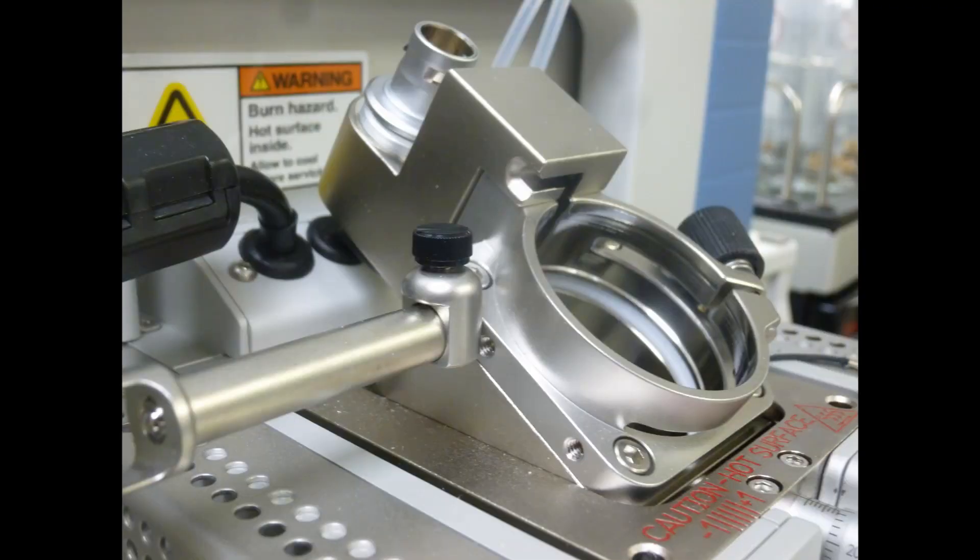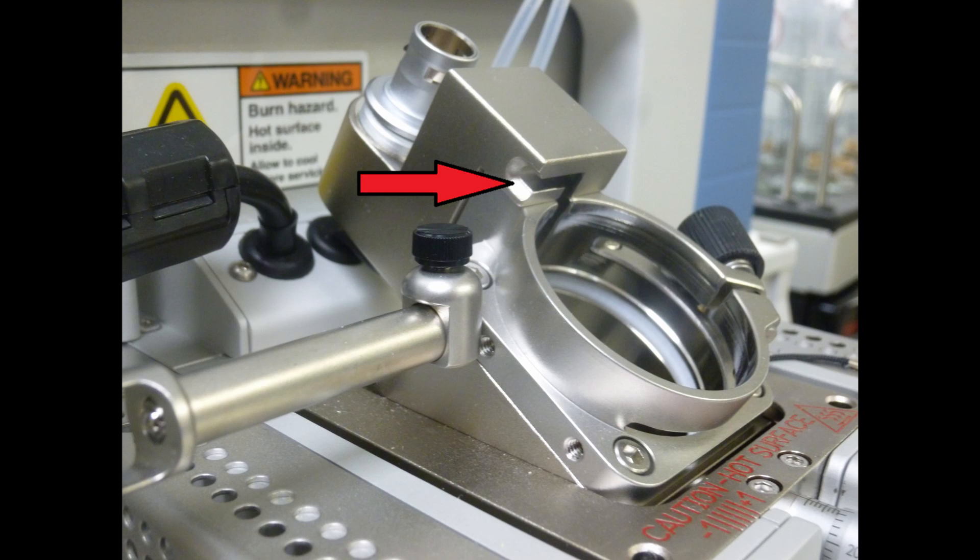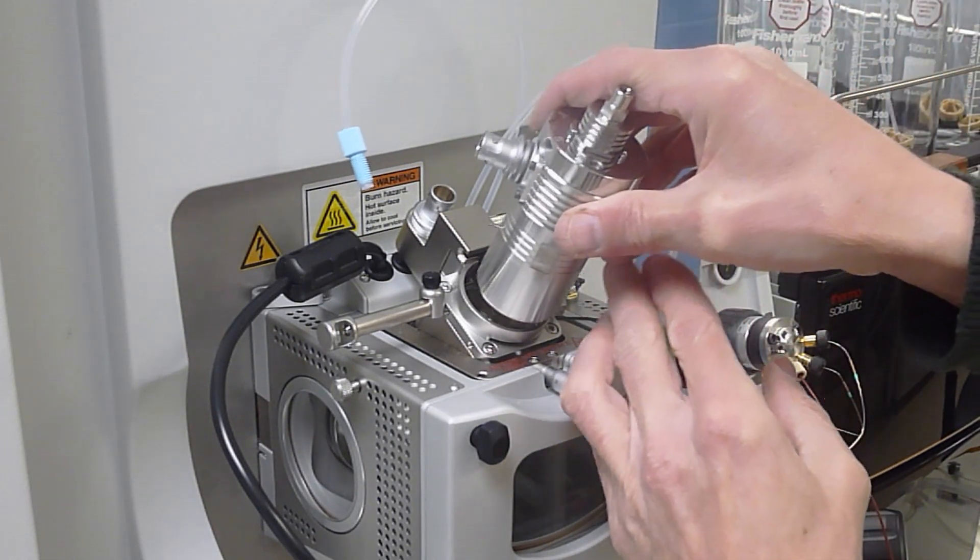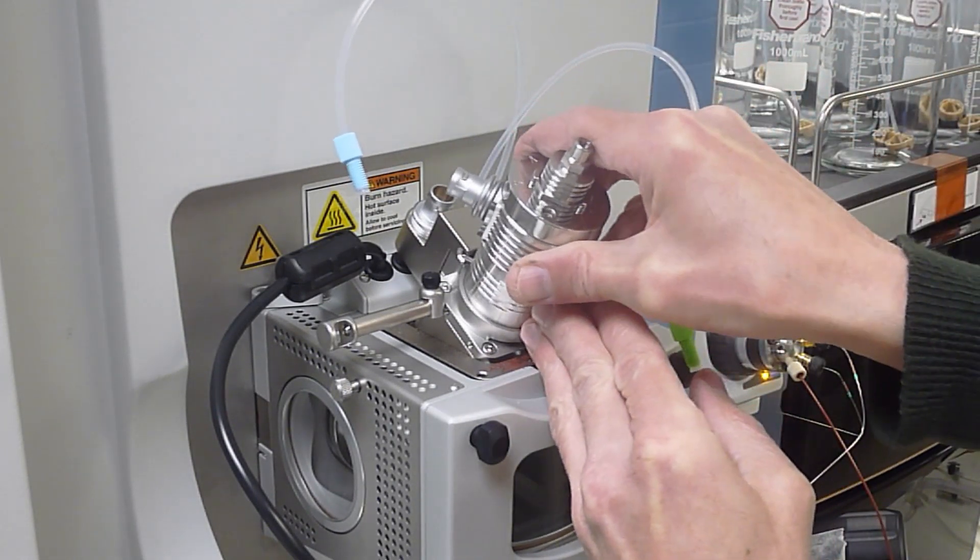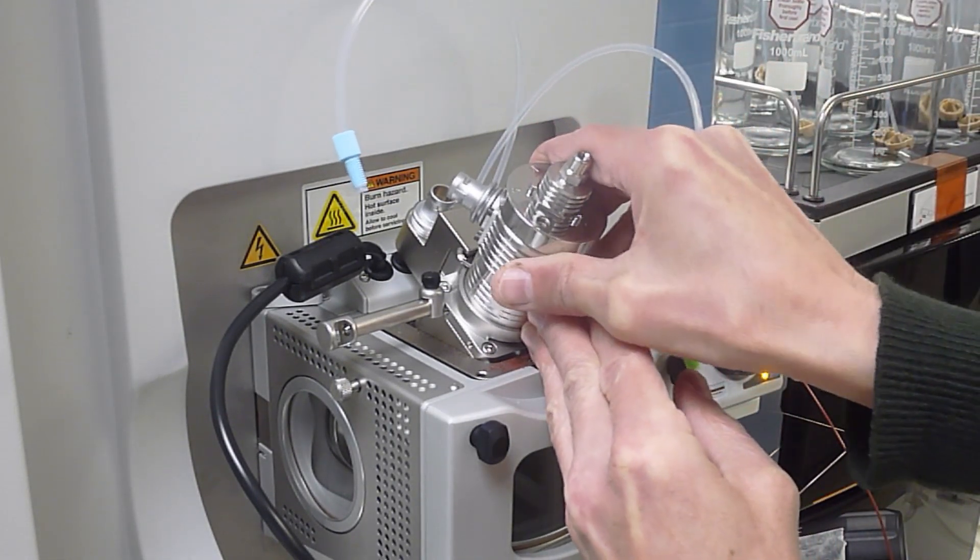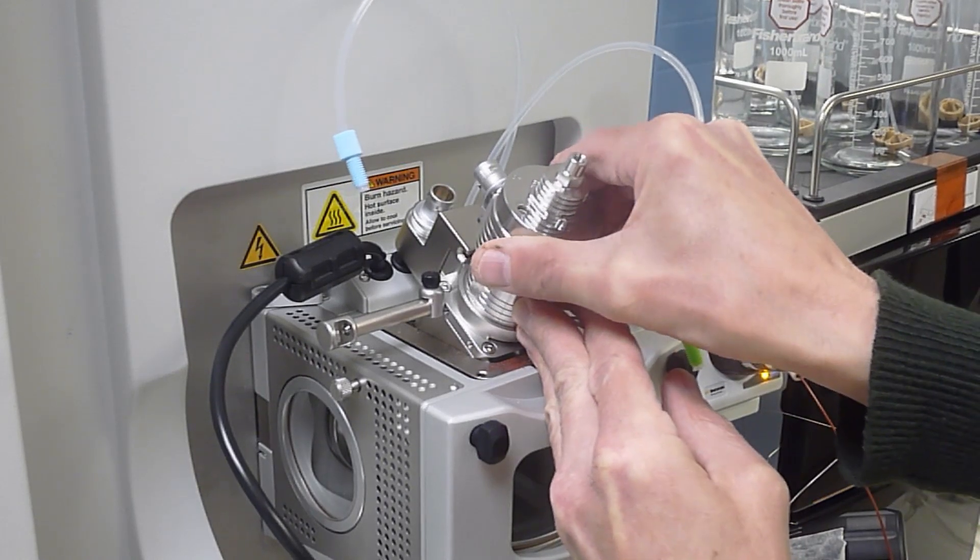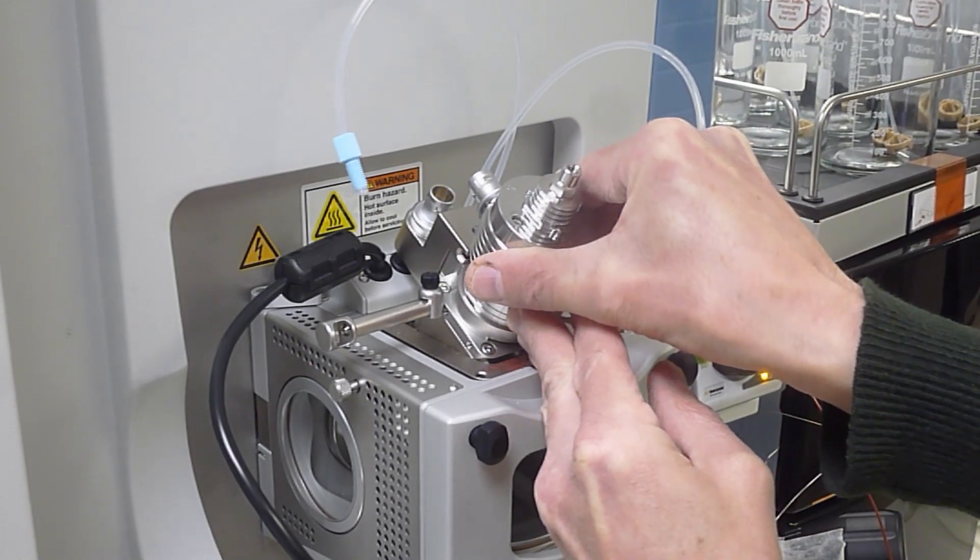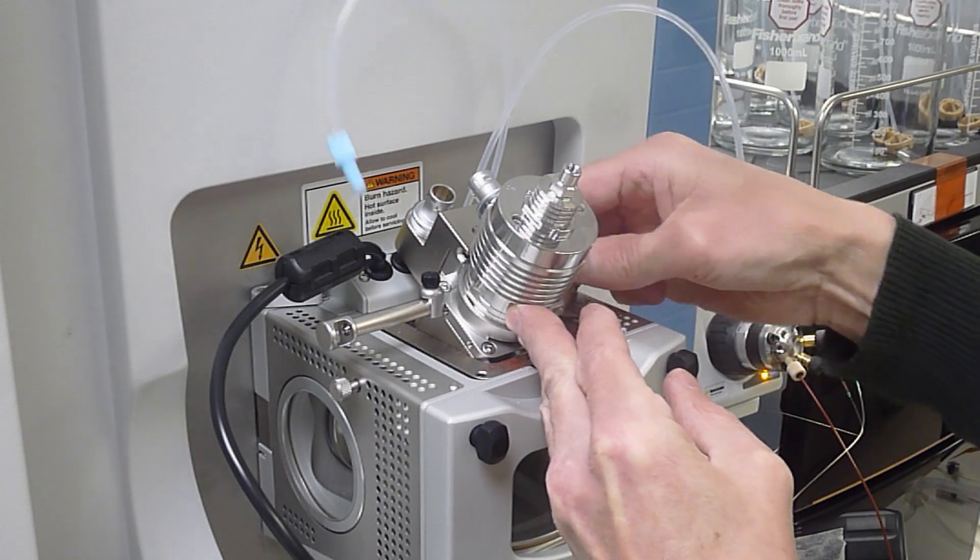Next we're going to fit the APCI probe. There's a pin on the probe that fits in the slot that you can see on the left side of the holder. Insert the probe, get the pin into its slot, rotate, push the probe further down to the correct position and then tighten the collar on the right hand side.